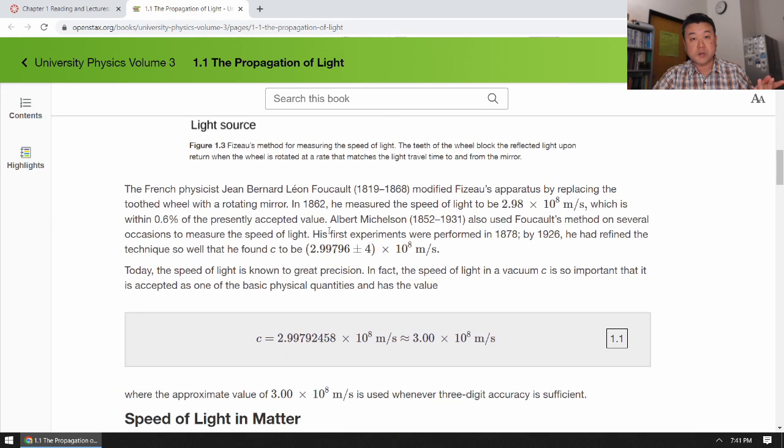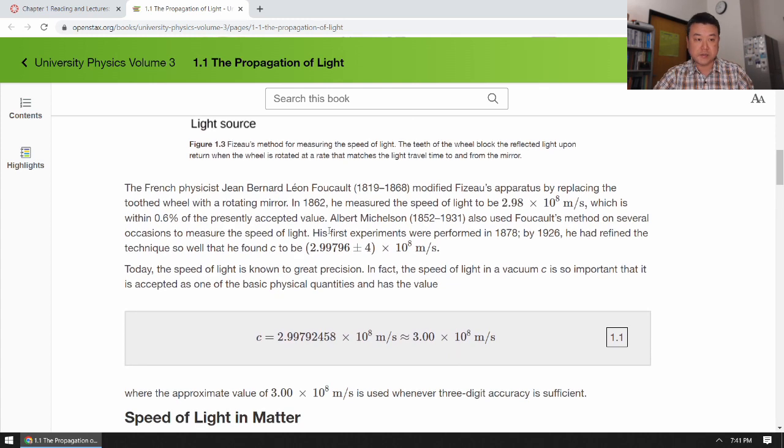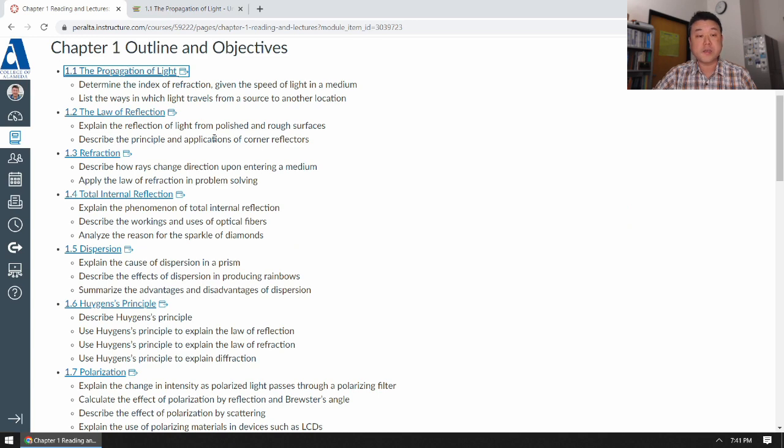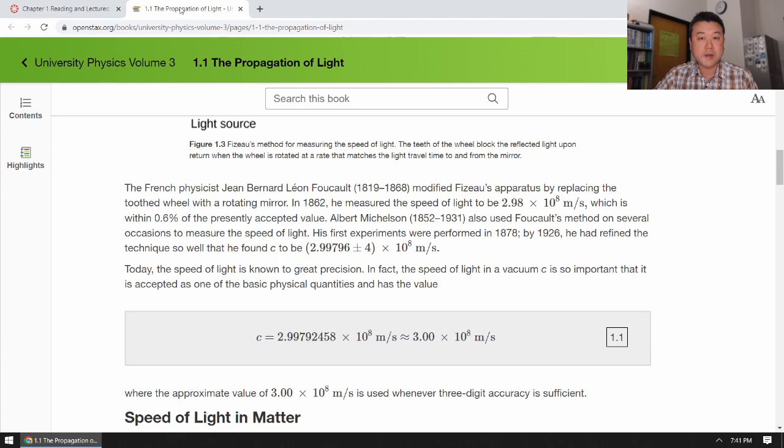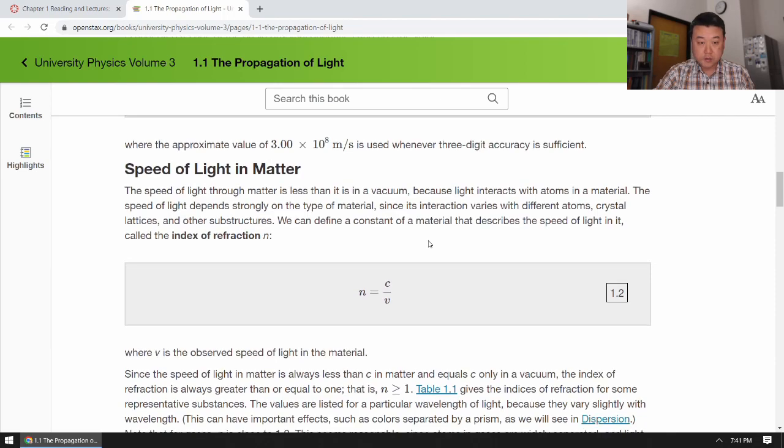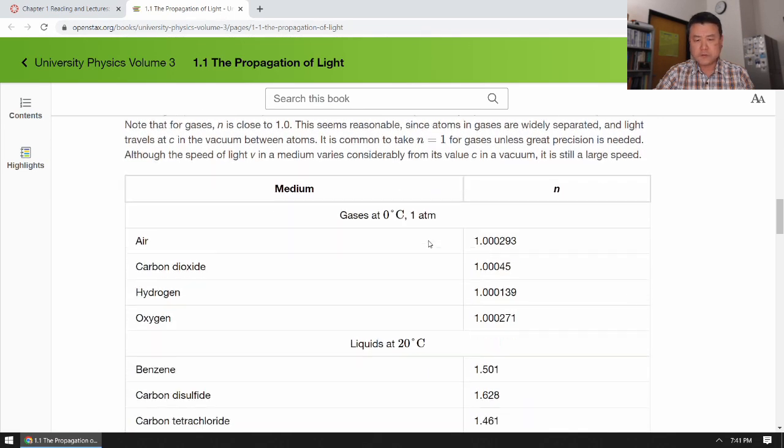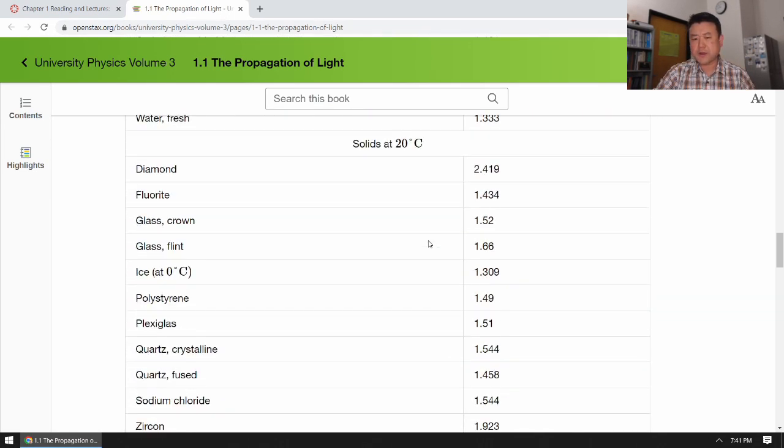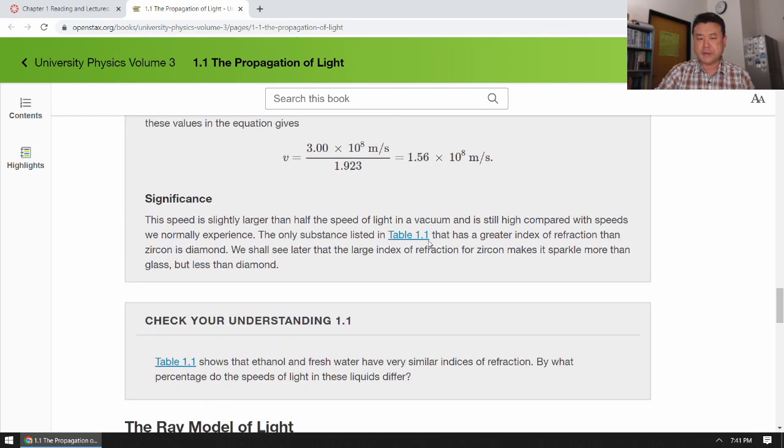In your lectures, that's linked from the Canvas site, you will see more explicit connection of, for example, propagation speed of light to Maxwell's equations, if you're interested. So that's section 1.1. It also covers index of refraction, a little bit on that later.